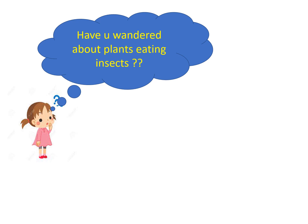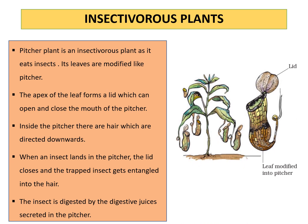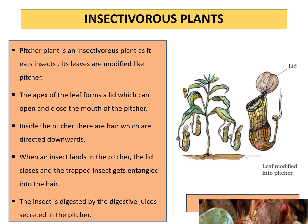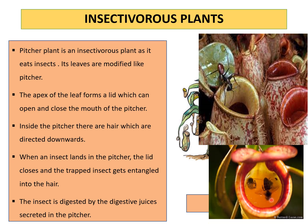Have you ever wondered about plants that eat insects? Yes, there are certain plants that eat insects — these are called insectivorous plants. The pitcher plant is one example. You can see in the picture that the leaf of the plant is modified in the shape of a pitcher. The apex of the leaf forms a lid that can open and close the mouth of the pitcher. Inside the pitcher there are hairs directed downwards. When an insect lands in the pitcher, the lid closes, the insect gets trapped and entangled in the hairs, and is then digested by digestive juices secreted inside the pitcher.